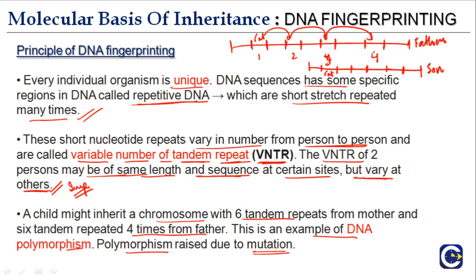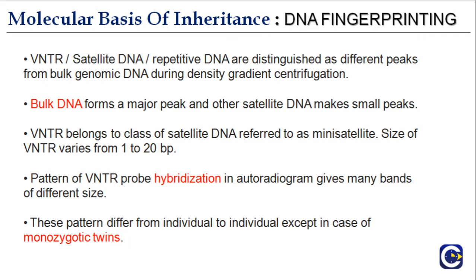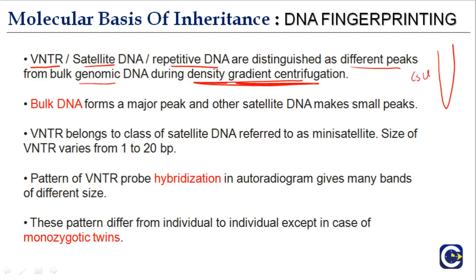The VNTRs or satellite DNA sequences in your DNA will be much more similar to your father's and mother's than to anyone else's. VNTR, satellite DNA, and repetitive DNA are distinguished as different peaks from the bulk DNA during density gradient centrifugation. The bulk DNA forms a major peak, while other satellite DNAs make smaller peaks.